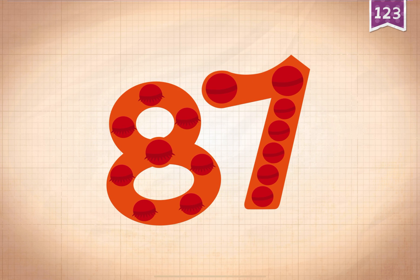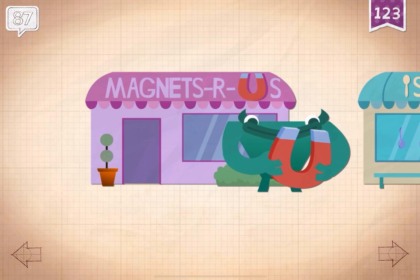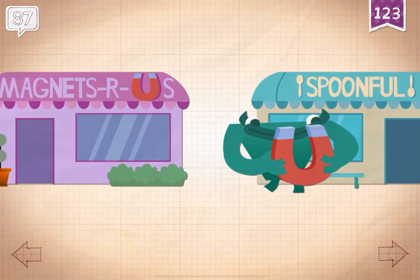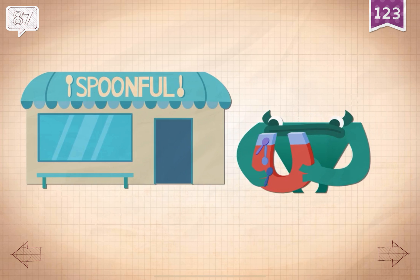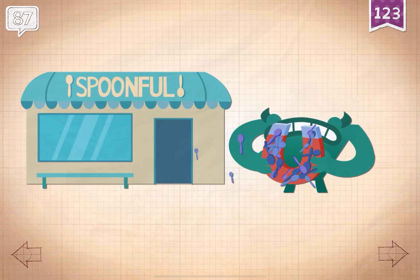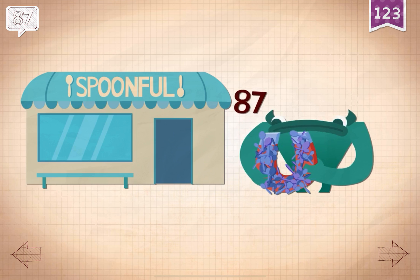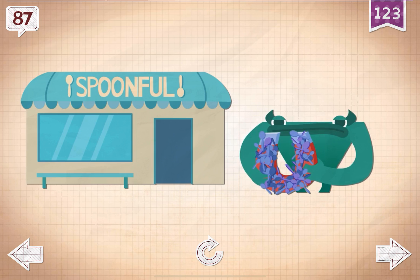87! There were 87 spoons stuck to Grok's magnet.